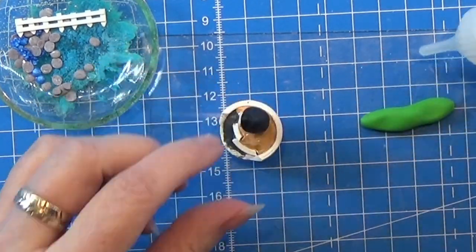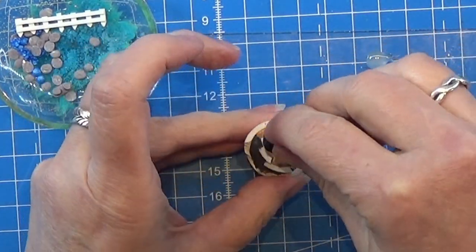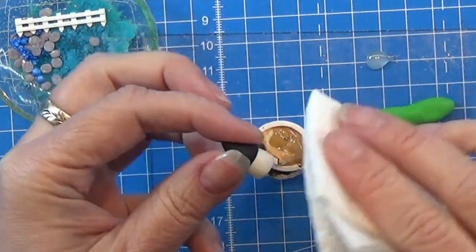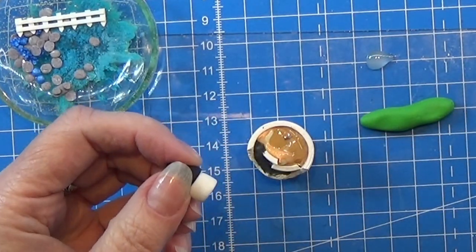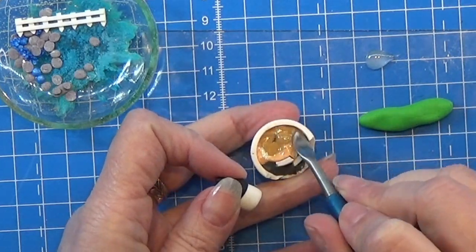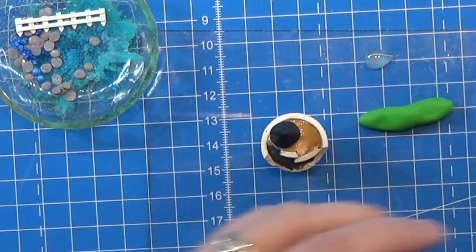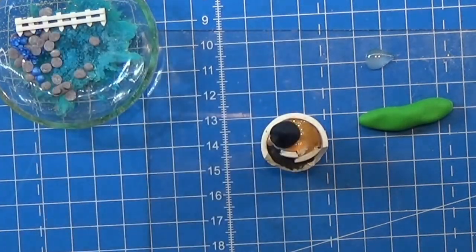I glued in the little house with my fimo liquid here to make sure that it will stay where I want it. I got a little too much fimo liquid there, so I am just going to put it all over here because I want the grass to stick.